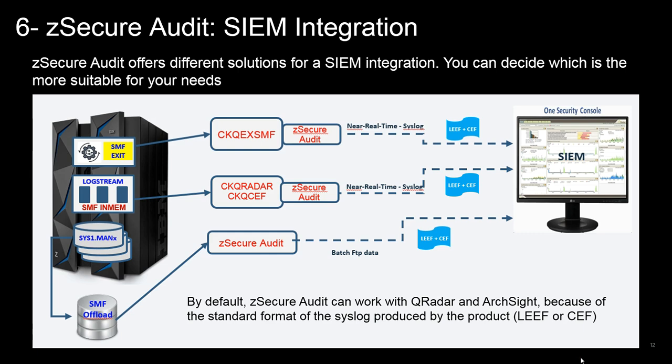zSecure Audit can use two different methods to realize the SIEM integration. The first is FTP file polling via batch — in this case you can postpone the transmission processing to a less busy time, and the SIEM can retrieve the events file according to the schedule configured on the SIEM console.